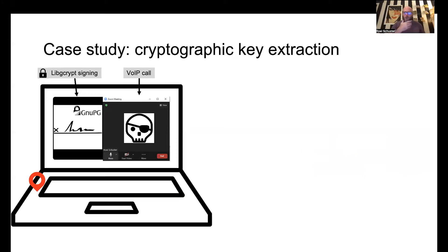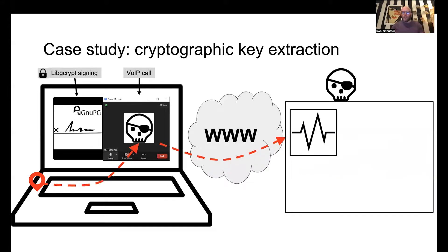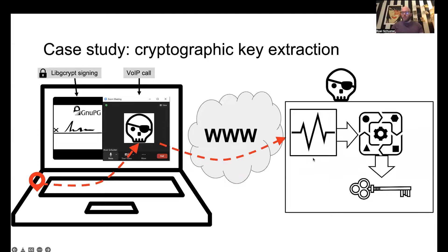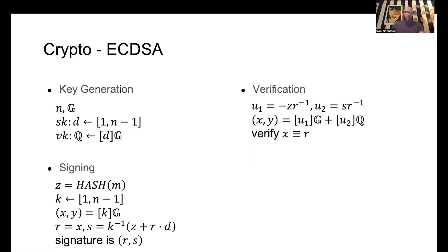Website identification is a closed-world problem, so we're going to try cryptographic key extraction, which is always appealing with side channels. Specifically, we're assuming the victim is performing libgcrypt ECDSA signing and they're on a VoIP call with the attacker. The attacker is going to try to recover the victim's secret signing key just from the call, while the victim is signing messages.